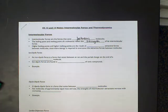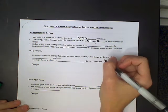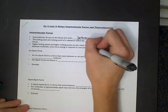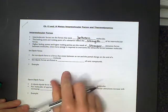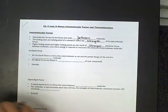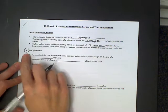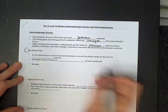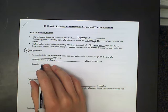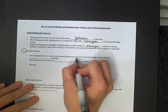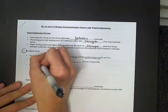If you have a higher boiling point and a higher melting point, that's going to be the result of stronger attractive forces between molecules. So the first kind we're going to talk about is ion-dipole forces. An ion-dipole force is a force that exists between an ion and the partial charge on the end of a polar molecule.